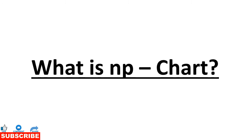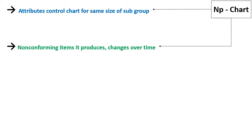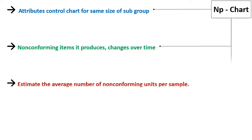An NP chart is an attribute control chart used with data collected in subgroups that are the same size. The NP chart shows how the process, measured by the number of non-conforming items it produces, changes over time. Typically, an initial series of samples is used to estimate the average number of non-conforming units per sample.